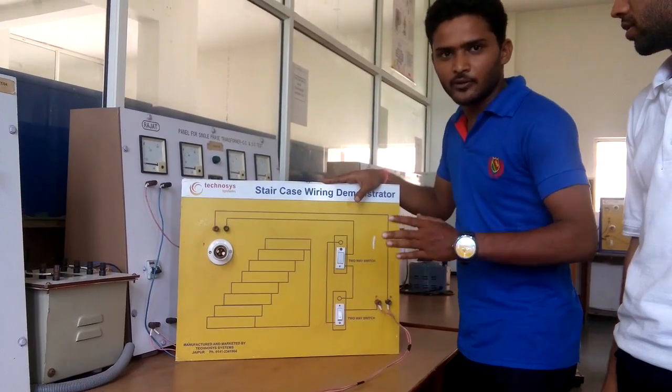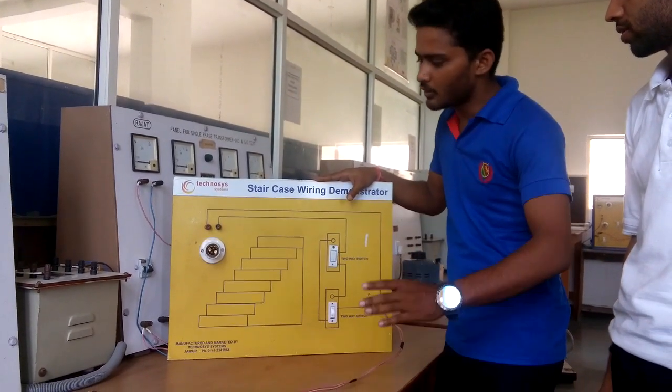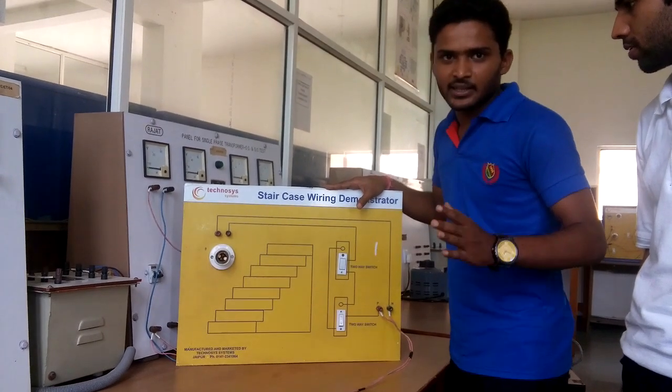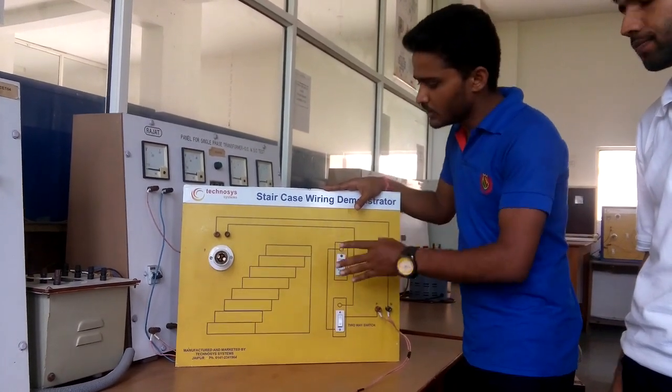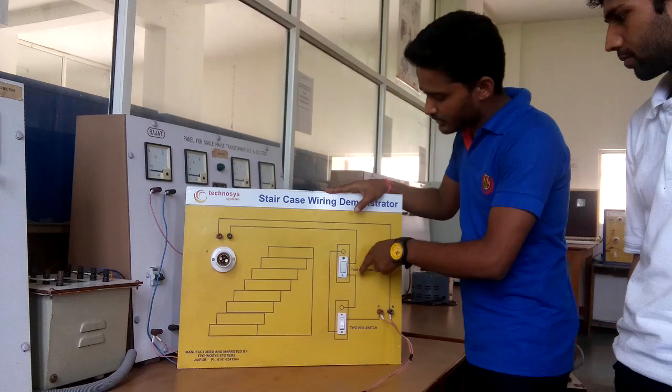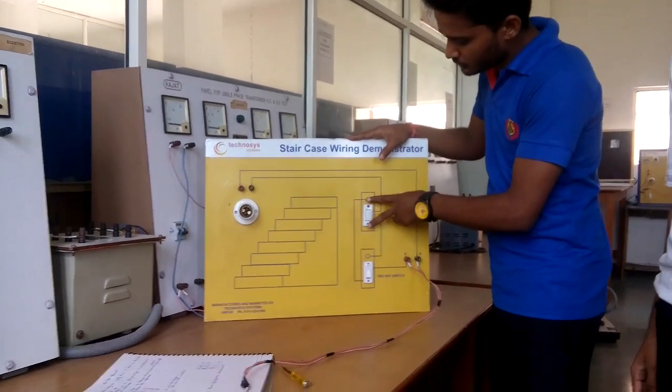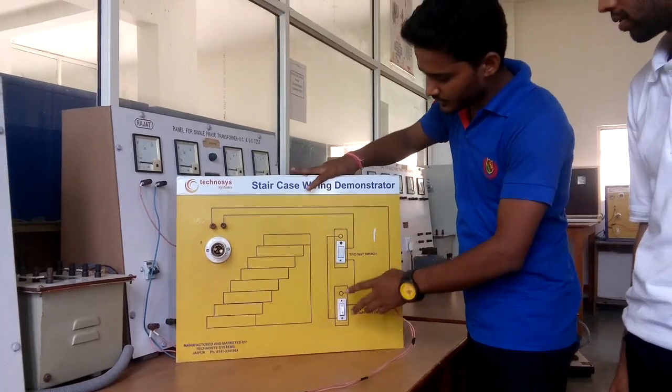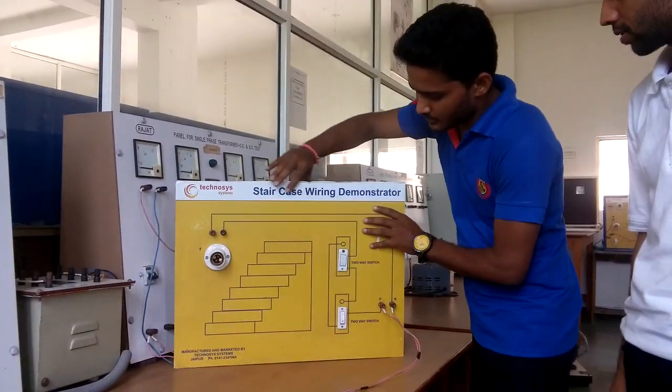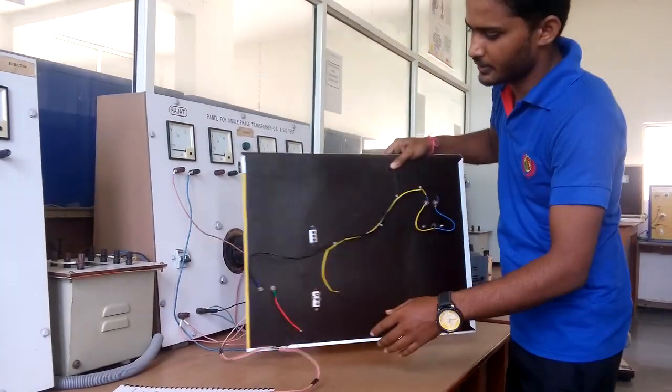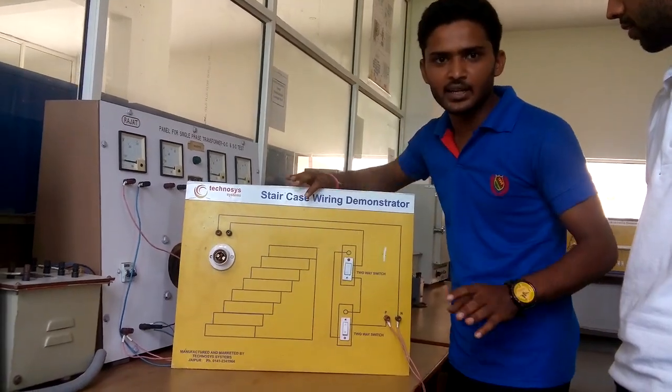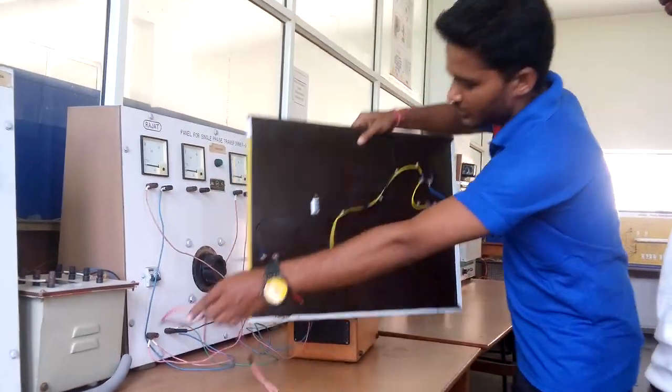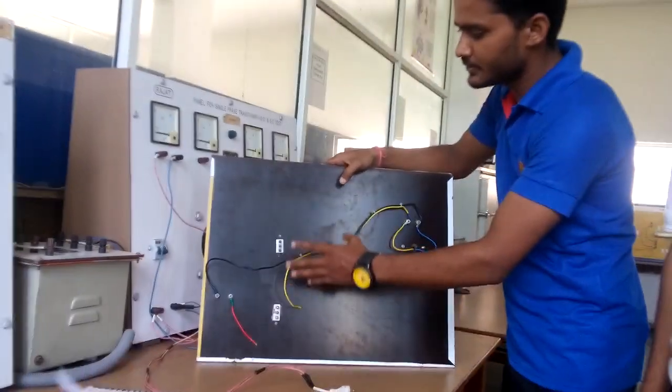We have a motive to perform this experiment. So the main motive of performing this experiment is to control any device, either it is fan or bulb from two different points. And here with the help of these three-pin switches, we will perform the experiment. We must understand how the connections are made.